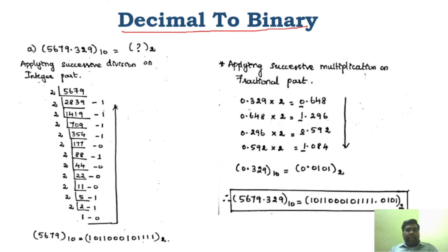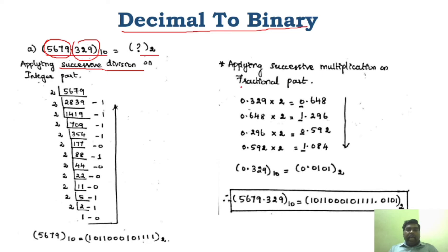Now let's start with decimal to binary conversion. The given decimal value has an integer part and a fractional part. For the integer part we use the successive division method, and for the fractional part we use the successive multiplication method.